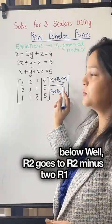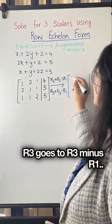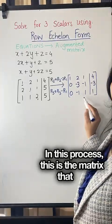R2 goes to R2 minus 2R1, makes a zero here. R3 goes to R3 minus R1. In this process, this is the matrix that you will get.